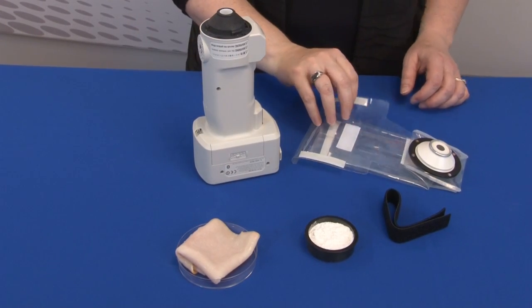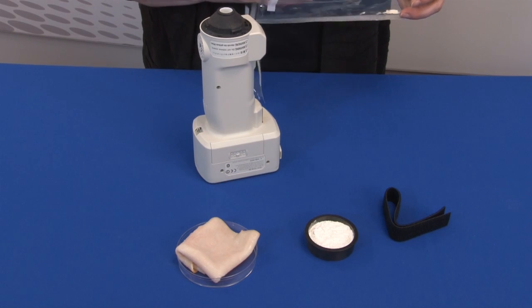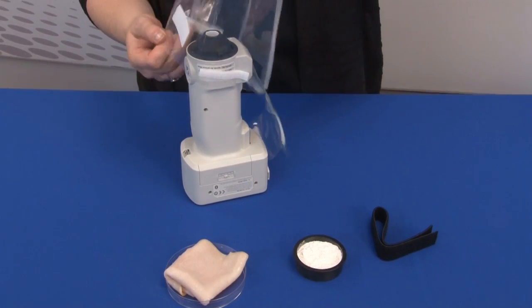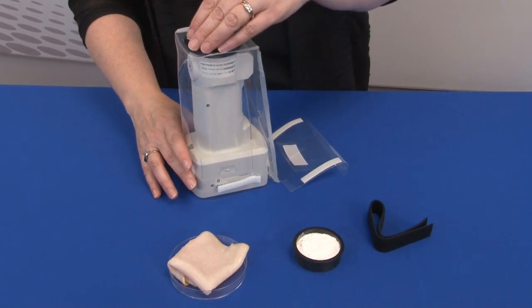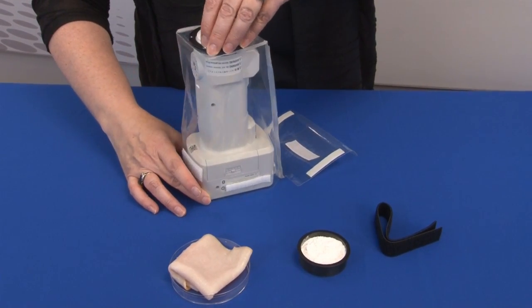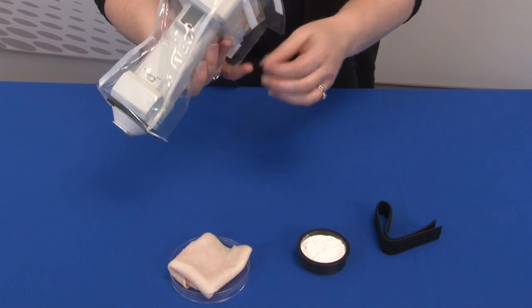For dusty environments, a dust cover is an important accessory to have for your instrument. This accessory is ideal for measuring paste, powders, or wet surfaces. Let's take a look at how a dust cover is easily and securely fastened around an instrument.